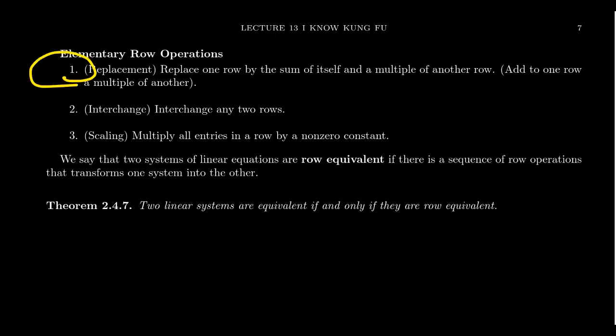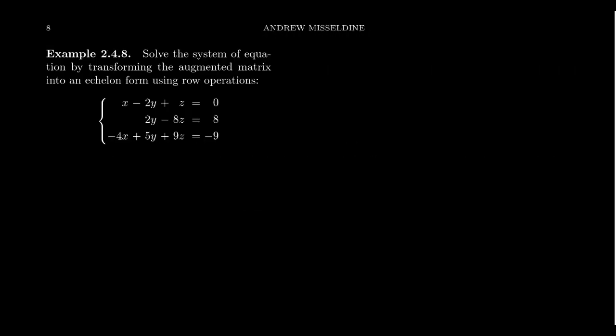The replacement operation is a little harder to convince yourself doesn't change the solution set. But looking at those simultaneous solution points, if you start adding multiples of one row to the other, the things that satisfy the first equation and the next equation, when added together, will still satisfy them. I'm not going to provide the proof of this theorem, but we are going to utilize it to help us solve systems of linear equations.